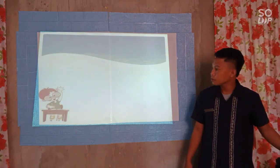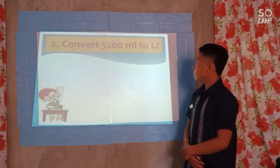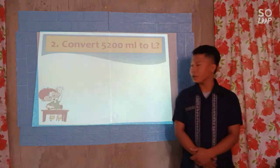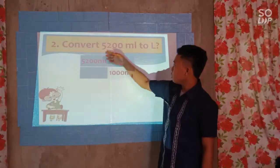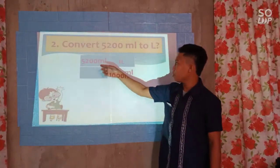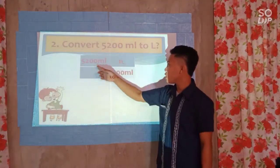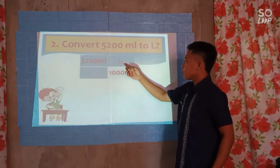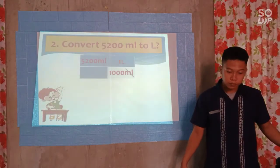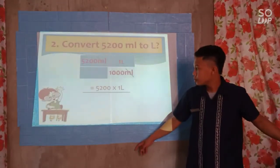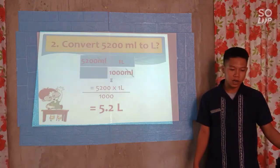Next: convert 5,200 milliliters to liters. Our given is 5,200 mL. Since we are finding liters, 1,000 mL is equivalent to 1 liter. 5,200 mL times 1 liter over 1,000 mL is equal to 5.2 liters. Group one, that's the correct answer.